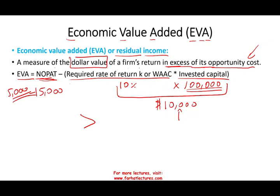Simply put, if you can earn more than what you are expected to earn — which is the required rate of return — then you have a positive EVA, or positive economic value added. Notice the answer is a dollar amount, not a percentage like 6% or 8%.